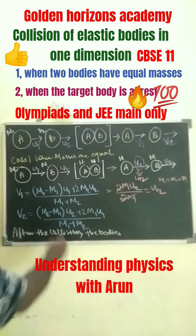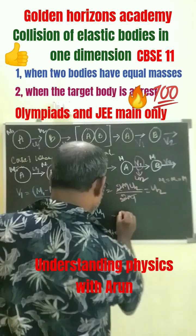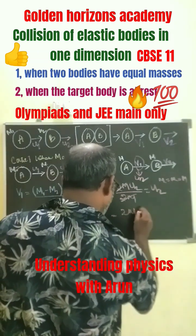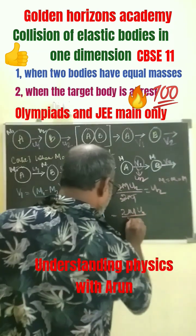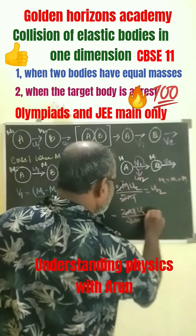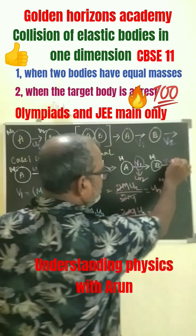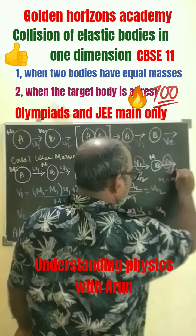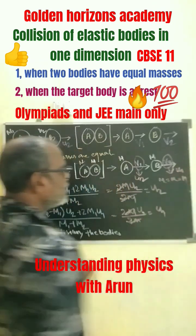Similarly, substituting here, the difference term becomes 0 and we get 2M·U1 divided by 2M, which cancels to become U1. That means Velocity 2 has acquired the velocity U1.